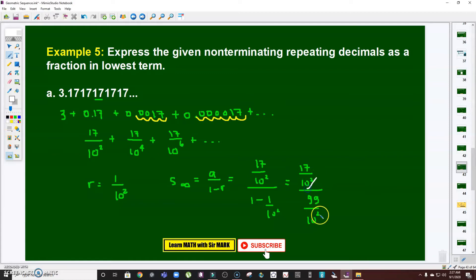The first term is 17 over 10 squared, all over 1 minus 1 over 10 squared. That is 17 over 10 squared over 10 squared minus 1, which is 99 over 10 squared. Clearly, the 10 squared will cancel, so what will be left here is just 17 over 99. But that 17 over 99 is just this part.